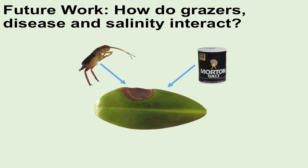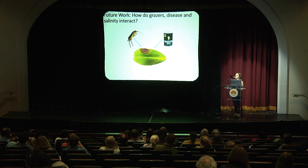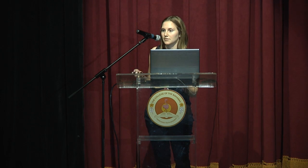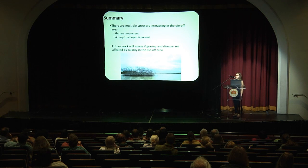We have multiple stressors interacting, but now we want to know how grazers, disease, and salinity interact — because salinity at the roots is really important and can be one of the main stressors that inhibits mangrove growth. Perhaps when these mangroves started dying off, high pore water salinity was the initial stressor. This summer we're going to do an experiment that manipulates salinity to see if we see any interactions.